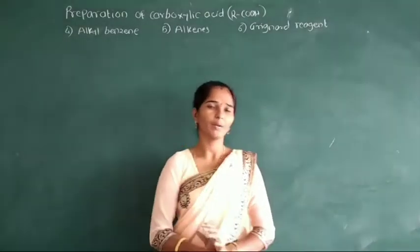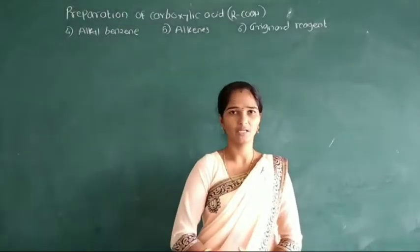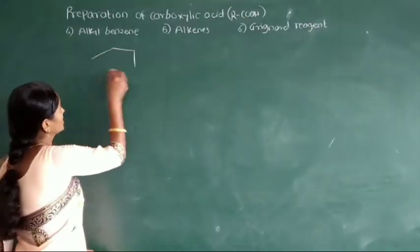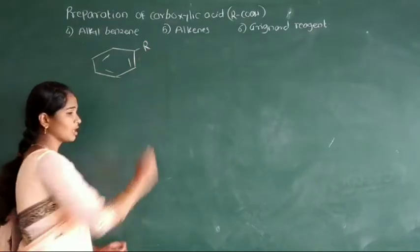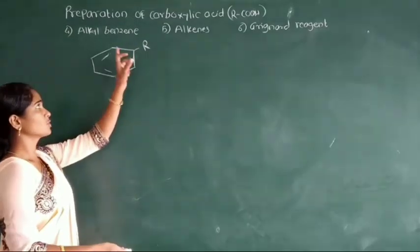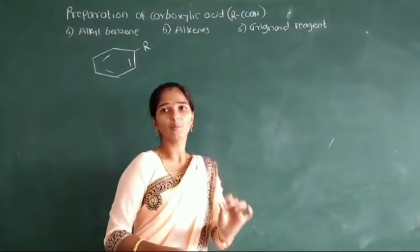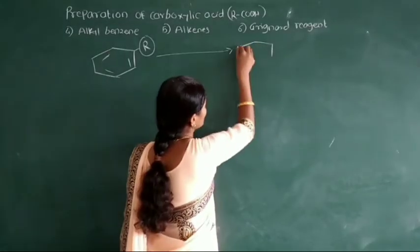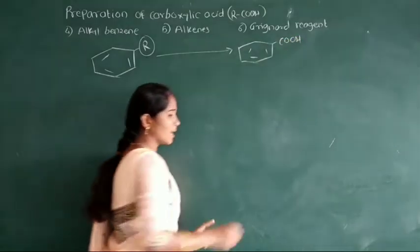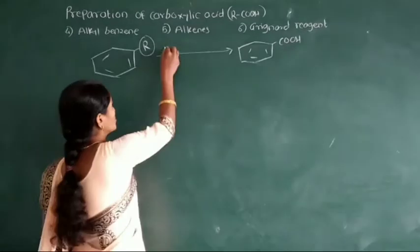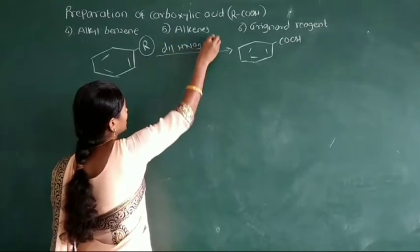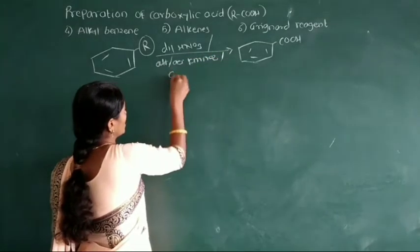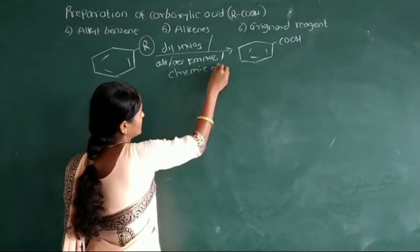This aromatic carbogenic acid is prepared by oxidation of alkyl benzene using a strong oxidizing agent. Suppose this is a benzene ring — here an alkyl group is attached to benzene. This alkyl group is oxidized into carbogenic acid using oxidizing agents like HNO3, or alkyl acid in KMnO4.